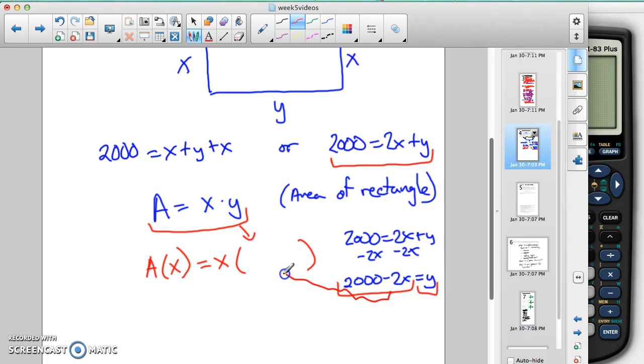We now know we can take this stuff that's y equal to here, and substitute it right there where y was before. So this stuff's going to become that y amount. So we're going to put the 2,000 minus 2x here.